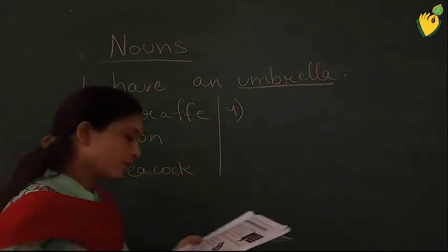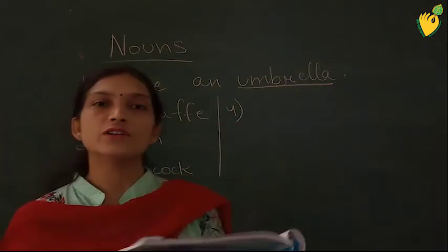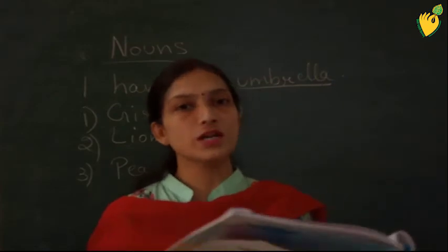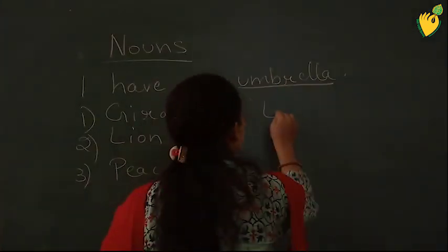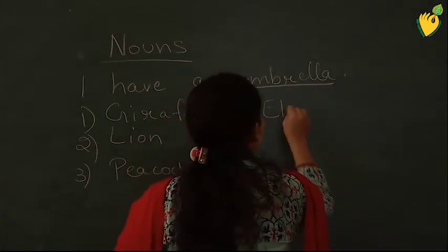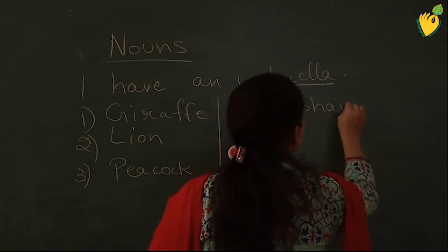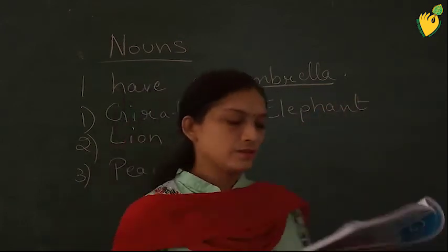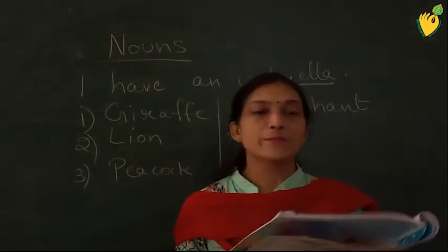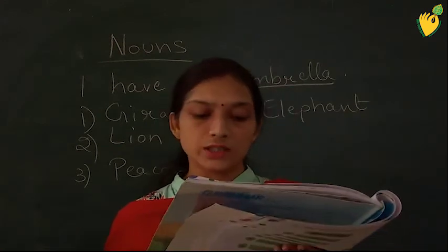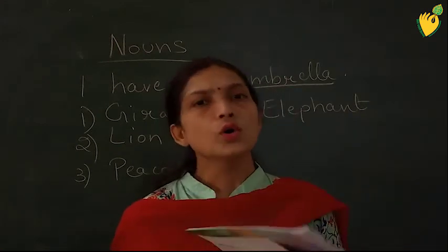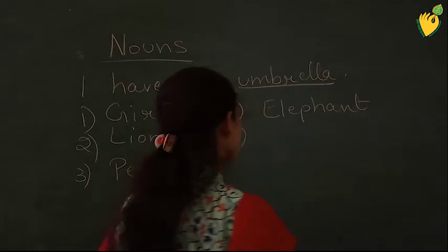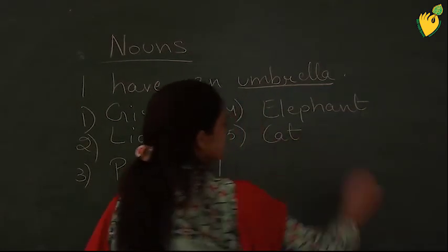Fourth riddle: 'I have a long trunk.' — An elephant has a long trunk. Fifth: 'My baby is called a kitten.' — Cat's baby is known as a kitten.